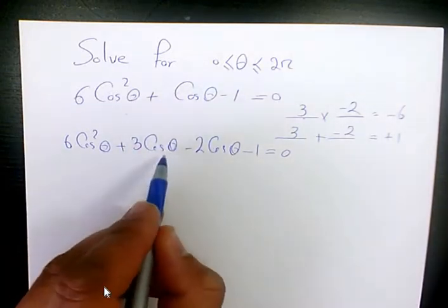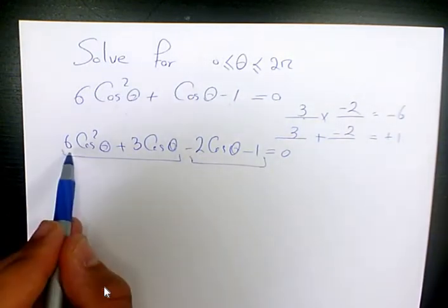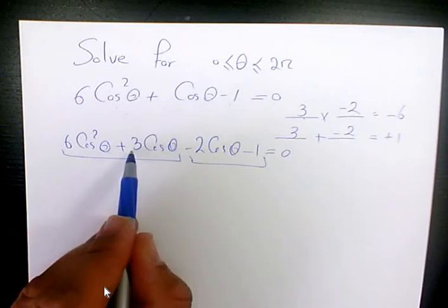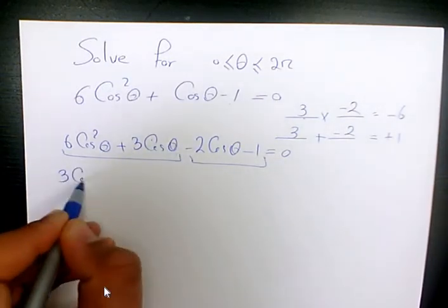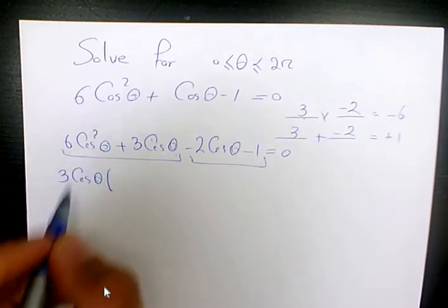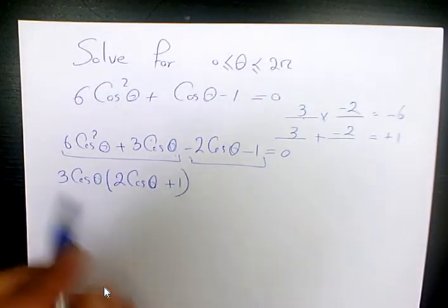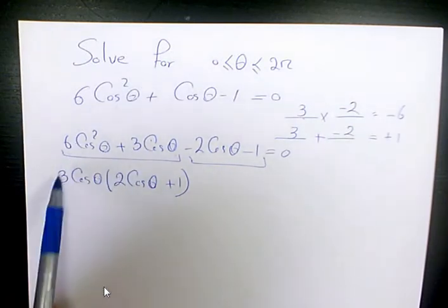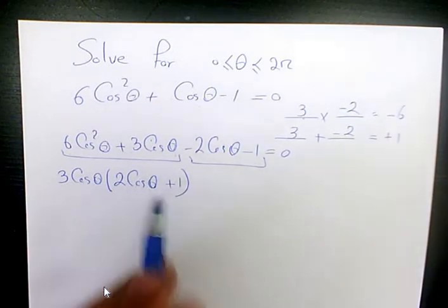Then what I can do, I can factor it by grouping. Here we have 6 cosine squared theta plus 3 cosine theta. I will factor out 3 cosine theta, and then it will be 2 cosine theta plus 1. So basically I divided both terms by 3 cosine theta, so it's going to be 2 cosine theta plus 1.